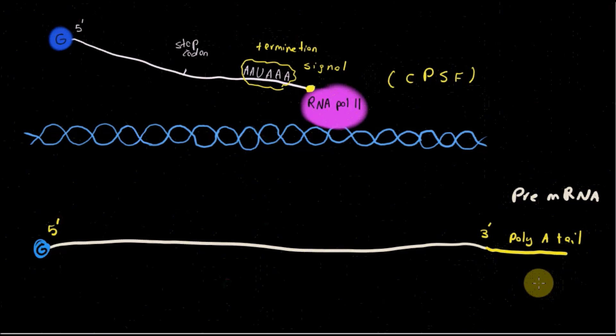This polyA tail has a couple of responsibilities. First of all, it protects pre-mRNA from degradation. It promotes nuclear transport of pre-mRNA from the nucleus towards cytoplasm. And later during translation, it promotes the translation.